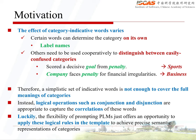Certain words can determine the category on their own, like label names, while others need to be used cooperatively to distinguish between easily confused categories. For example, the word 'penalty' itself cannot signify the sports category, but when combined with the word 'goal', the text is likely to talk about a football match. Conversely, the additional word 'company' could imply the business category rather than sports.